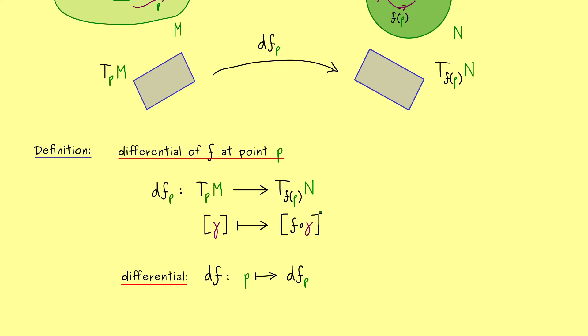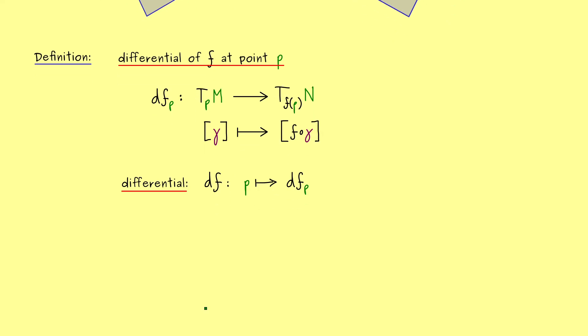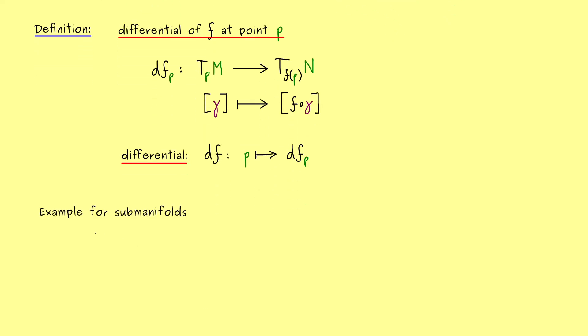Now to get an idea what this differential actually means, let's look at an example, in particular let's look at submanifolds. We do that because we already know for submanifolds the tangent space is much easier to grasp. Let's consider M and N as smooth manifolds embedded into R^n, so something we call a smooth submanifold of R^n.